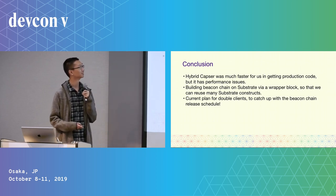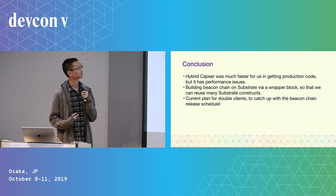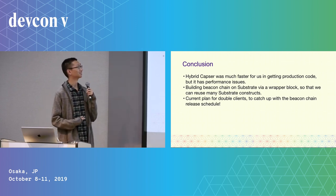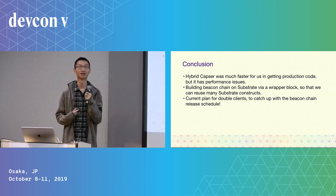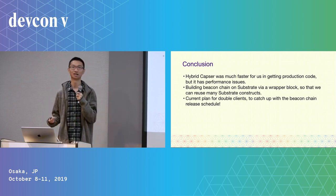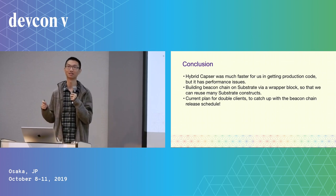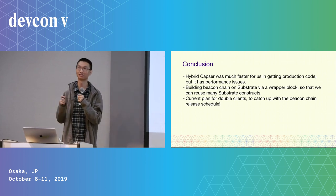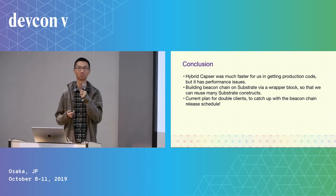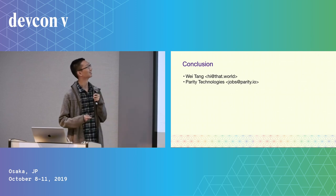Basically, we are talking about writing a generic client for Ethereum 2.0. In the beginning we had hybrid Casper, which we unfortunately had to abandon because of performance issues. We then decided to build the beacon chain on the substrate runtime using what is called a Vapor Block, so we can reuse a lot of substrate components. Our current plan is to build double clients — the first without the substrate runtime to catch up with the mainnet release schedule, and another with the substrate runtime so we can continue exploring building a truly generic blockchain framework. That's all — thank you.